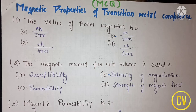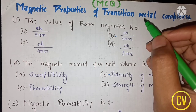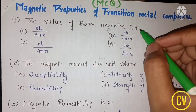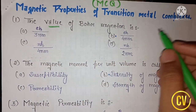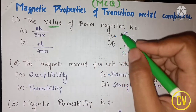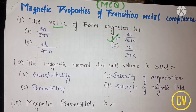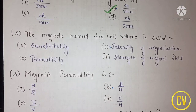Now let's start with today's topic: magnetic properties of transition metal complexes. The first question asks for the value of the Bohr magneton. This has been asked many times in exams, so you have to remember that the Bohr magneton's value is e·h upon 4πm.